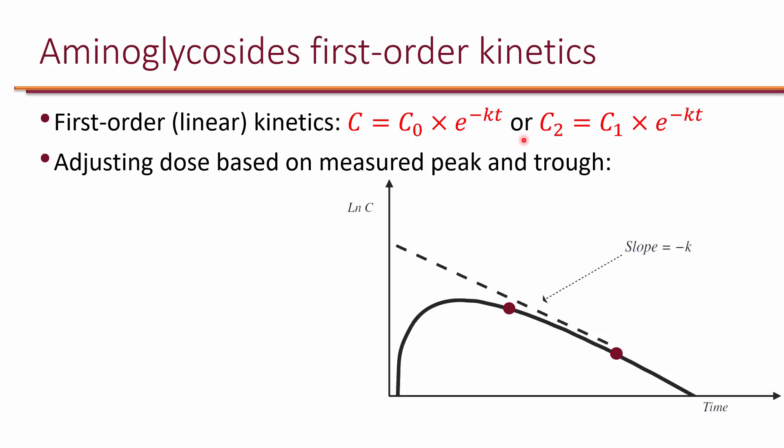So we can adjust the dose of aminoglycoside based on measured peak and trough. We can calculate the K based on the two levels that we get, because K is the slope of this line. So K equals ln of C1 over C2 divided by delta T. Imagine this first level is C1, or sometimes it could be the peak, but it doesn't have to.